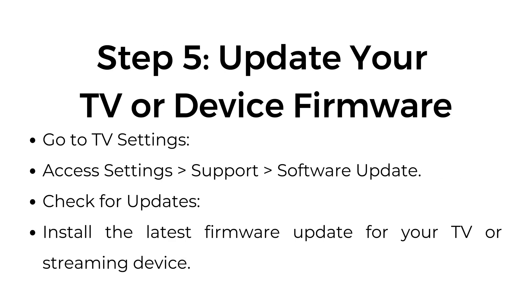Step 5: Update your TV or device firmware. Go to TV settings and access Settings > Support > Software Update. Check for updates and install the latest firmware update for your TV or streaming device.